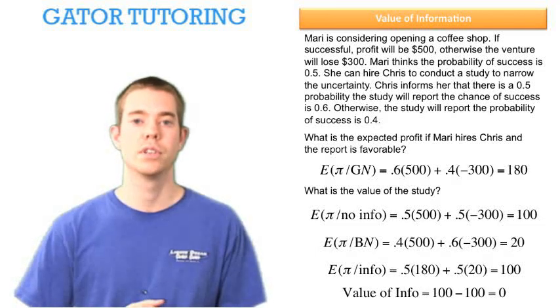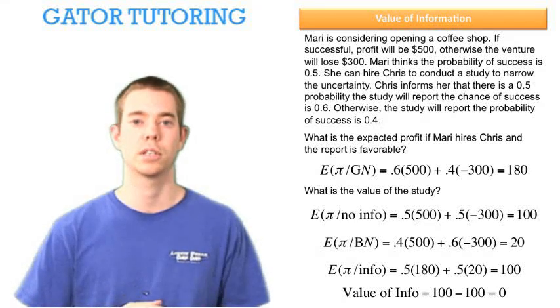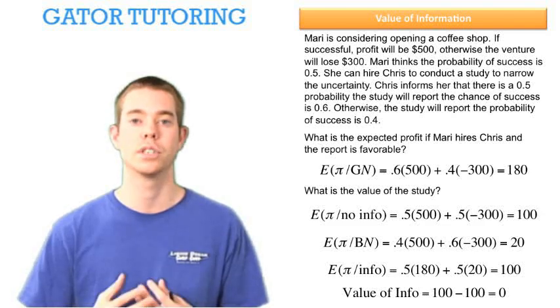So the value of this information is the expected profit given information minus the expected profit with no information, which in this case is 100 minus 100, or 0.